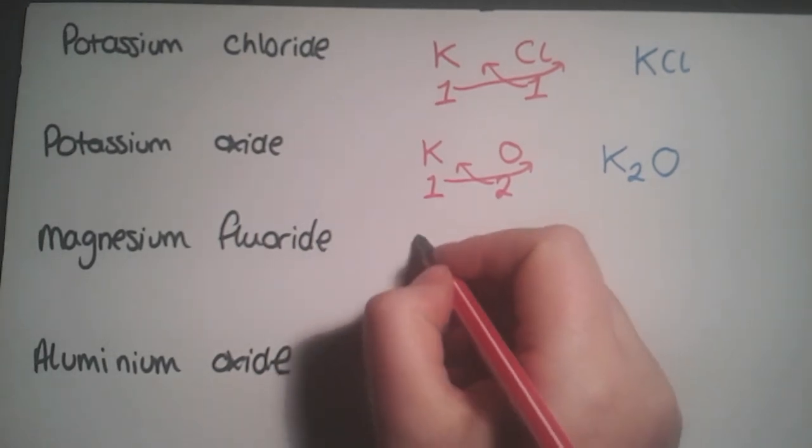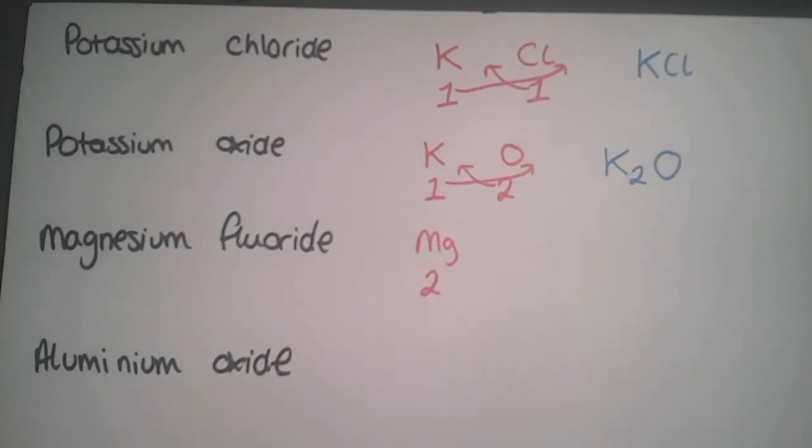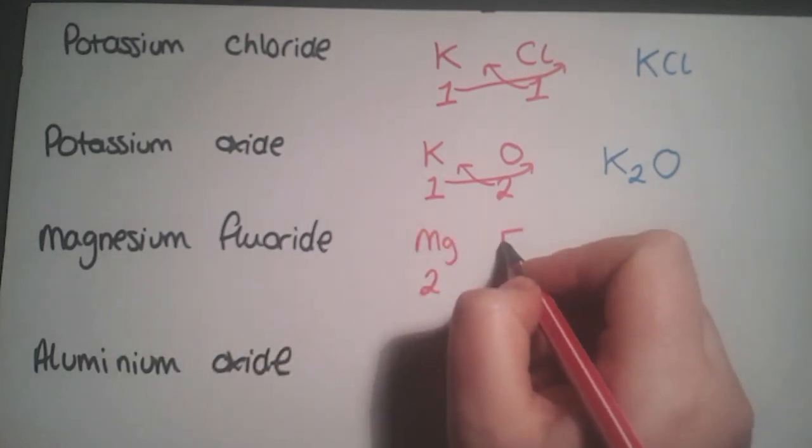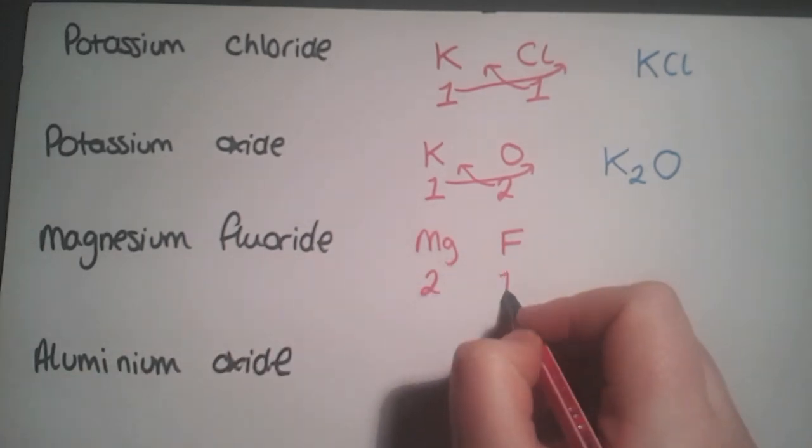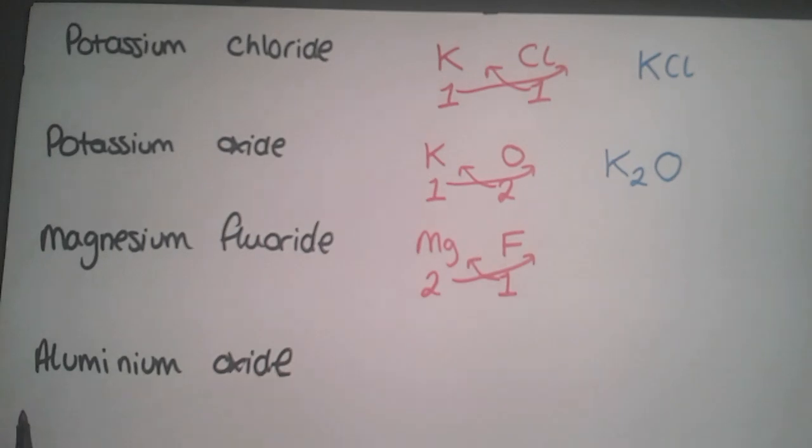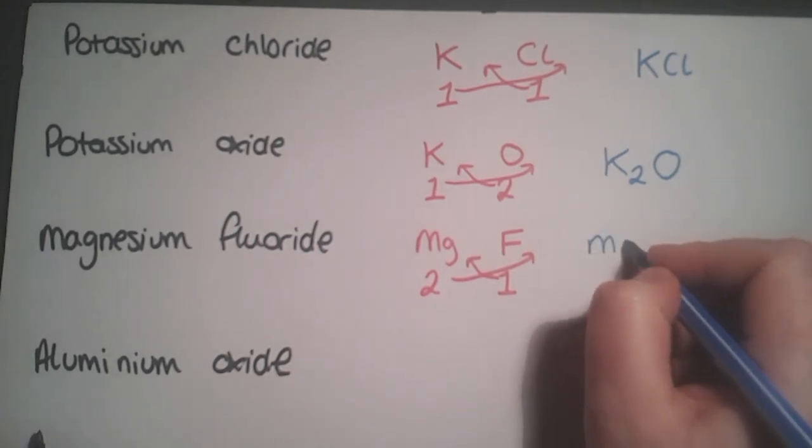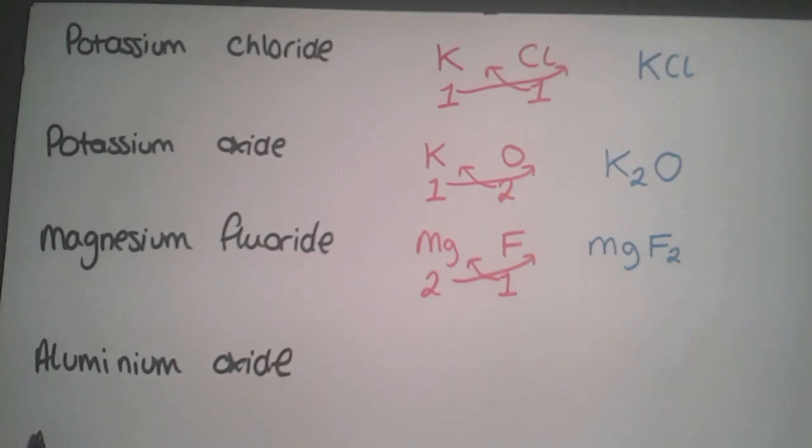Magnesium fluoride: magnesium is in group two with two outer electrons it can lose when forming a compound. Fluorine is in group seven like chlorine, so valency one. Simply swap over the valencies and you get MgF2.